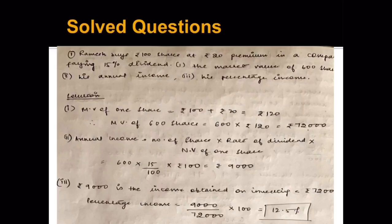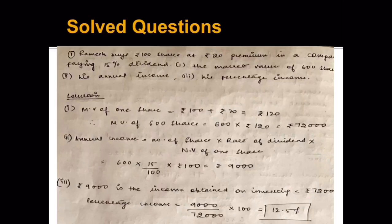Next, his annual income — that is the dividend. Dividend is calculated on face value, so despite the market value being 120, we use face value 100. Rate of dividend 15 percent into 100 into 600 gives rupees 9,000. His percentage income, that is the return percentage: total income upon total investment into 100 — so 9,000 upon 72,000 into 100 gives 12.5 percent.